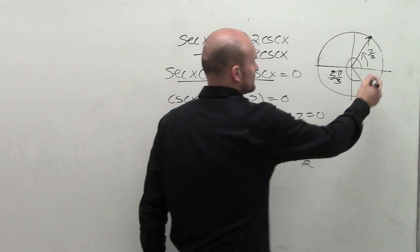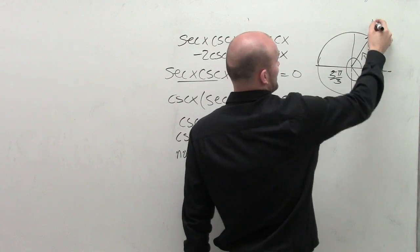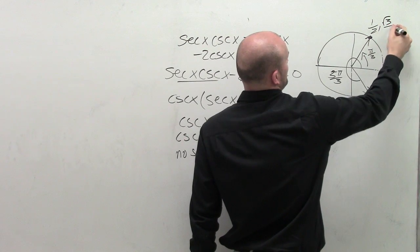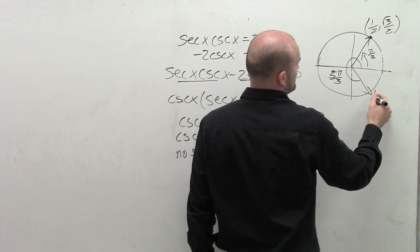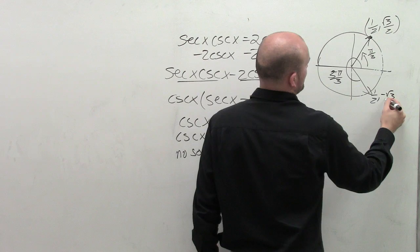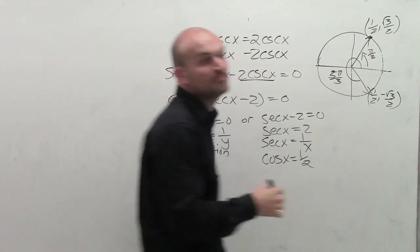So those are the two angles where my cosine is equal to 1 half, as represented as 1 half comma square root of 3 over 2, and at 1 half comma negative square root of 3 over 2. You can see the x coordinate is both 1 half for there.